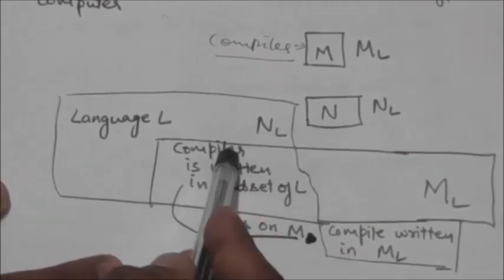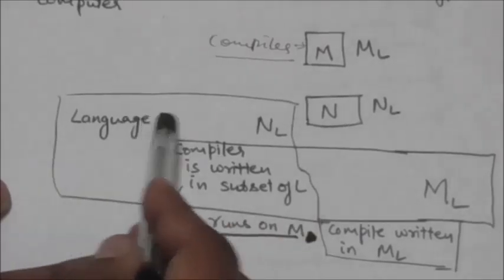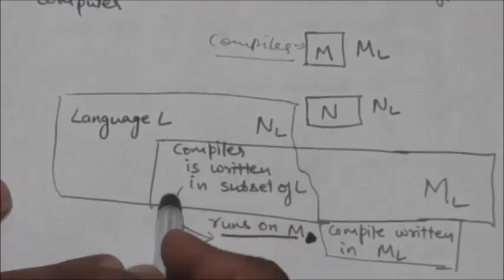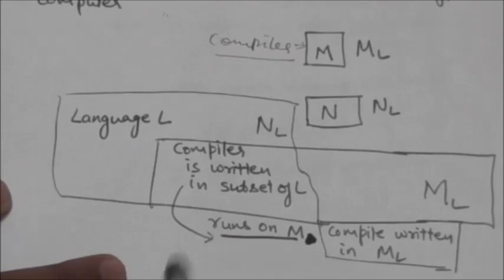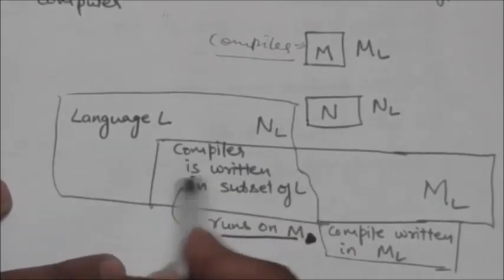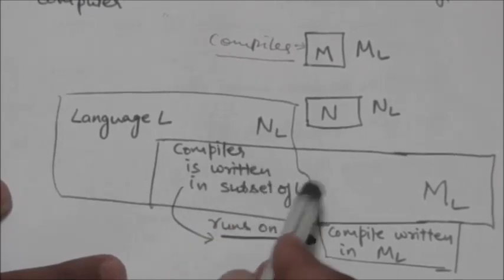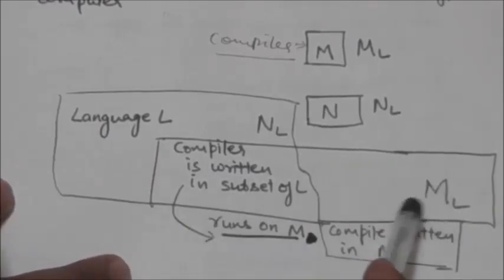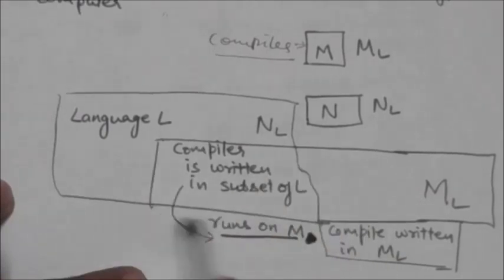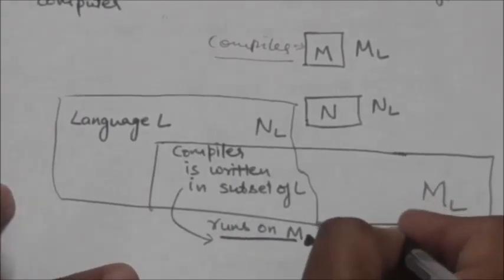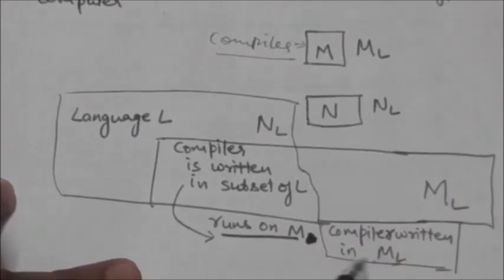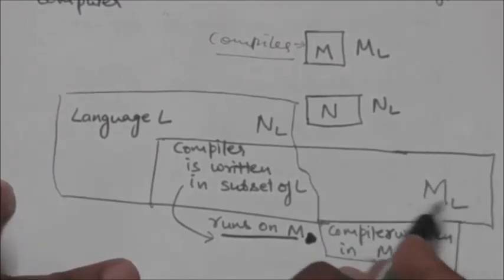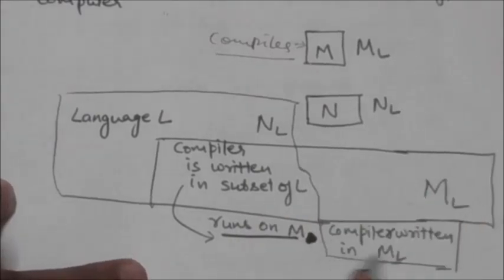This compiler, which is written in a subset of language L and which translates language L into machine language NL, should run on machine M. Since it is to run on machine M, it has to be translated into machine language ML. So we will write a compiler in machine language ML, because a compiler written in ML will be executable on machine M.